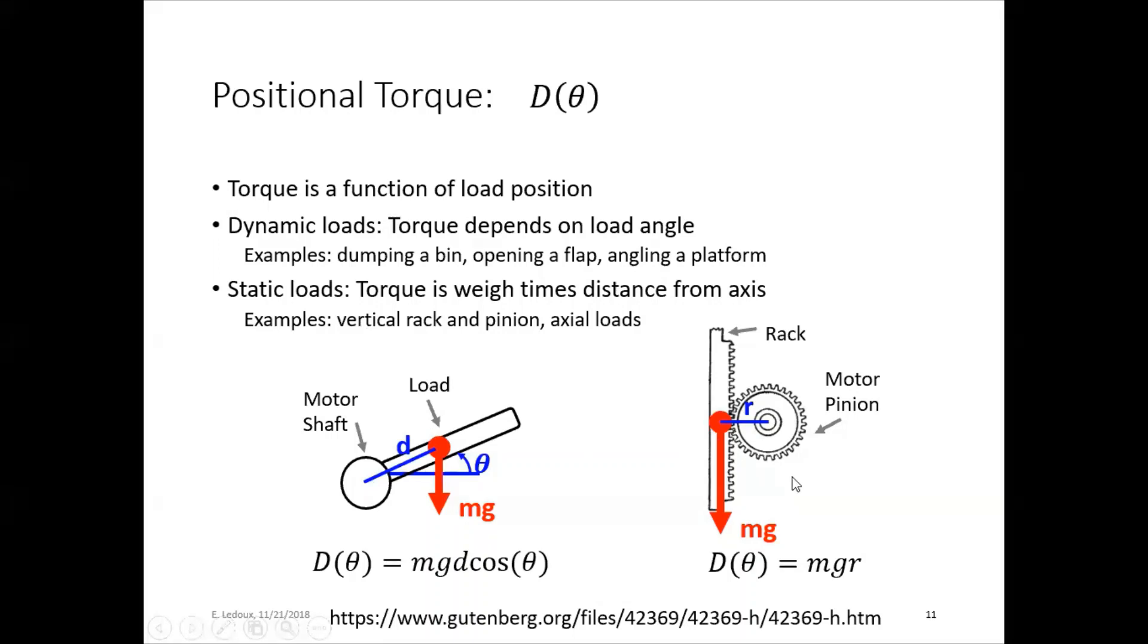Now for a more static load, example here is a rack and pinion. You can see that as the motor turns, the pinion turns, the pinion is this round one, and the rack will move up and down. So the weight is going to be the same distance away from the axis all the time.